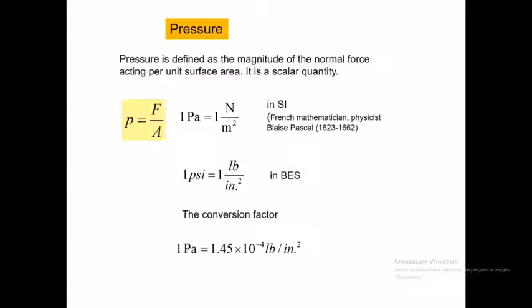In the British engineering system we use Psi — one Psi is one pound divided by inch squared. To convert between Psi and Pascal, one Pascal equals 1.45 × 10⁻⁴ Psi.